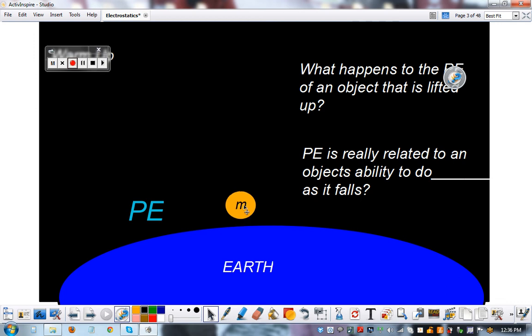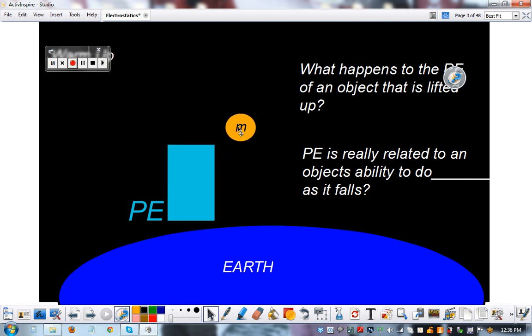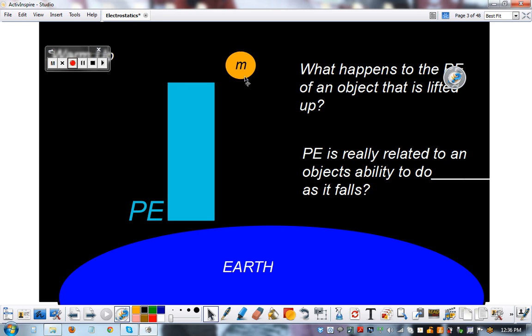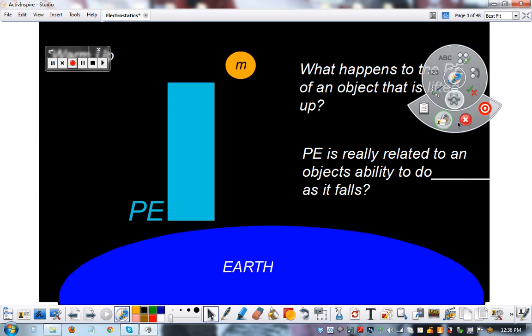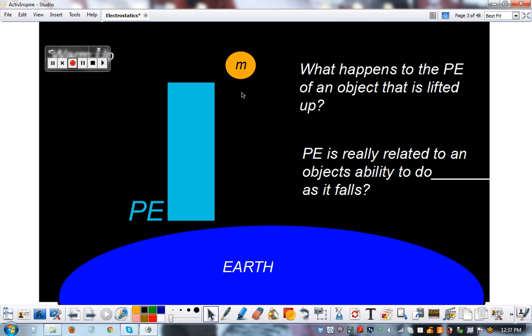If we take mass and lift it up above a planet, the potential energy is increasing and increasing. And what that means is that it has more ability to do work if we drop it. Whether it's turning a water wheel or crushing a car, it can do work as it falls.